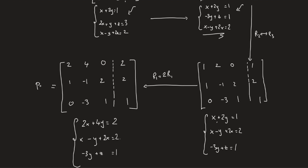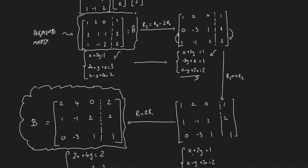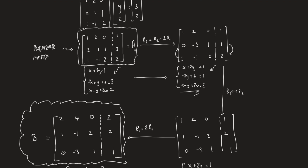Let's denote this final matrix by B and the initial matrix by A. Since B is obtained by a sequence of elementary row operations on A, then A is row equivalent to B. Obviously, B is also row equivalent to A — it's a two-way relationship. By performing the inverse row operations — dividing by two instead of multiplying, re-exchanging the second and third rows, then adding two times row one back instead of subtracting — you will recover matrix A. Starting from B, you can get back to A by performing the inverse row operations.